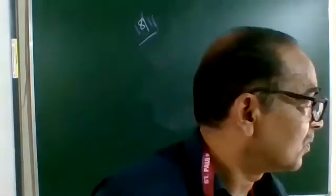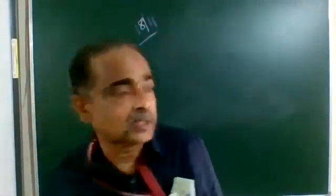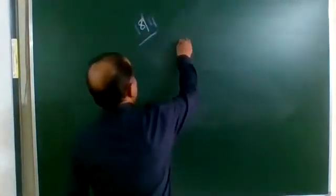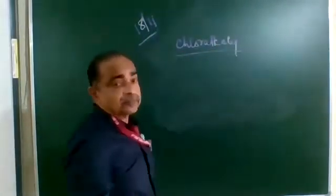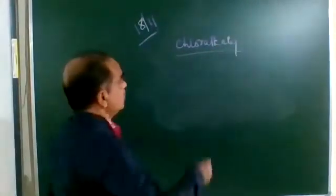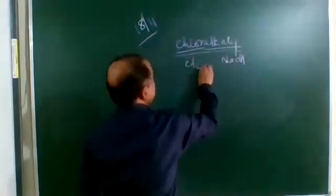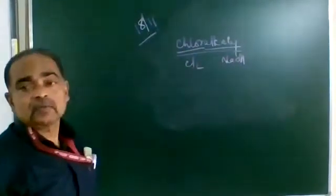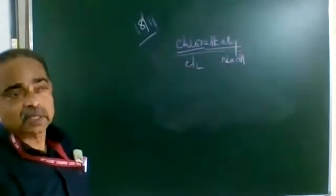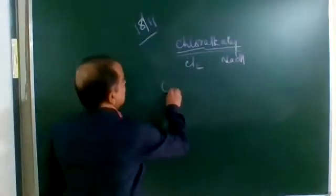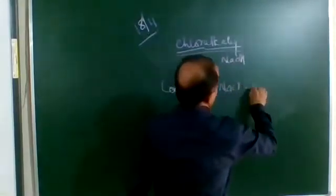One important product we get from common salt is caustic soda. The process is known as the chlor-alkali process. Chlor-alkali means there are two things: one is alkali, and the second is chlorine. So the manufacture of chlorine along with the alkali is the chlor-alkali process. In this process, a concentrated solution of NaCl is electrolysed.